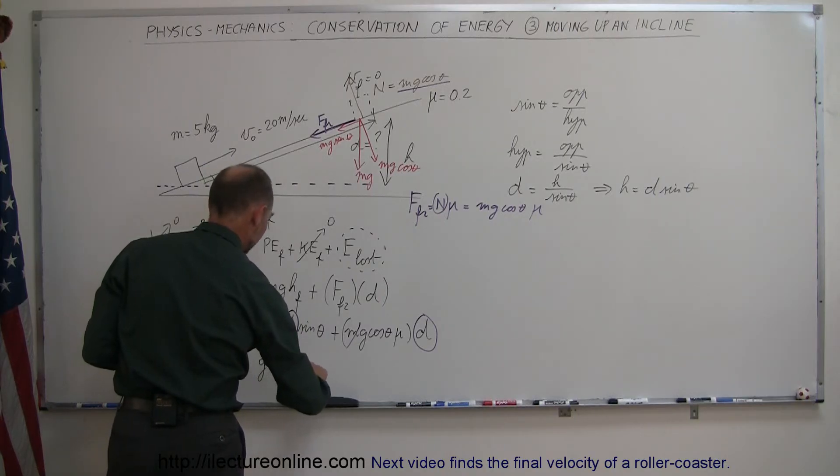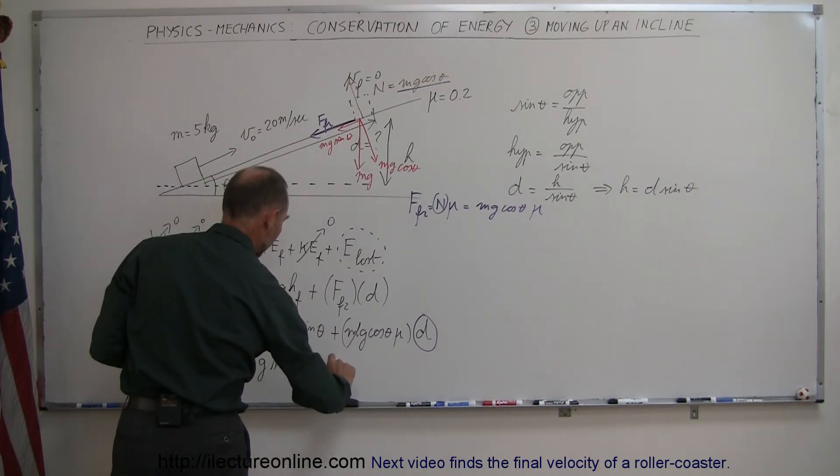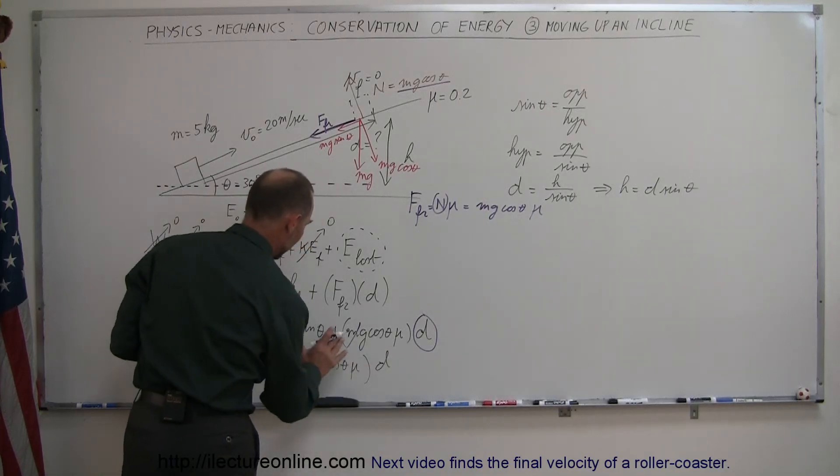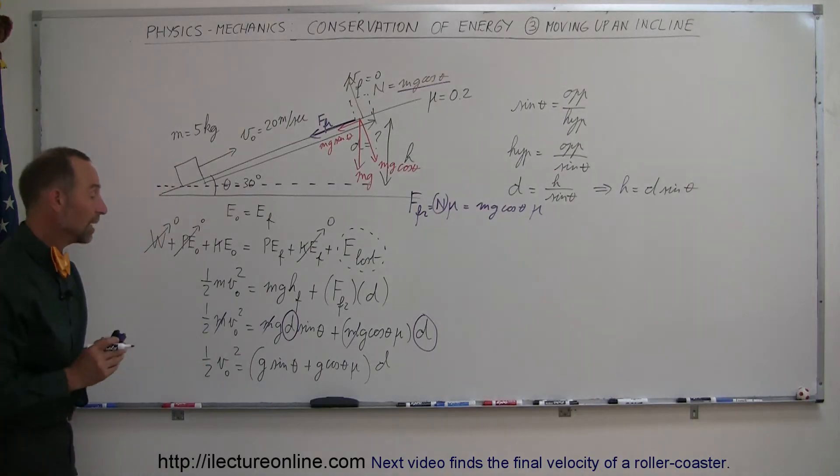So we have 1/2 V initial squared is equal to G sine theta plus G cosine theta mu, and the whole thing multiplied times D. So what I'm doing here on the right side is factoring out the D.